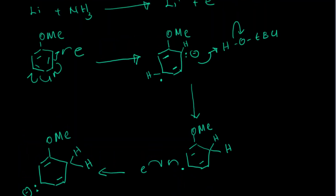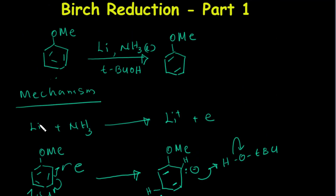That's the Birch reduction mechanism. It's a radical-type reaction, but it starts with lithium reacting with liquid ammonia to generate the solvated electron — that is the reaction's starting point. It's also important to note that if you don't have a proton source in your system, the reaction will not continue. In the next video, I will talk about the Birch reduction mechanism when you have an electron-withdrawing group on the benzene ring.